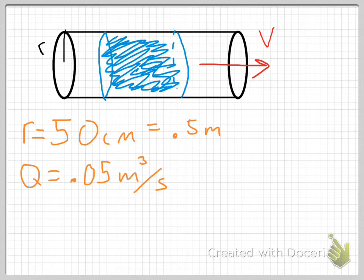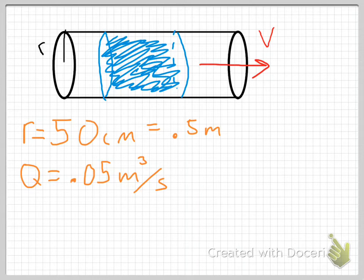Just to review, a flow rate is some unit of volume that's moving per unit time. It's not the same thing as a velocity, but it's related to a velocity. What we're saying is if something has a flow rate of, say, a gallon per second — which is a pretty fast flow rate — that means if I'm standing next to this pipe and timing one second on my stopwatch, one gallon flows past me.